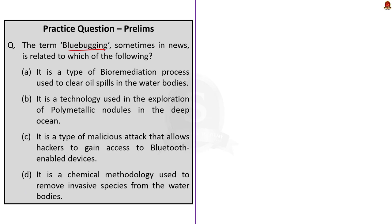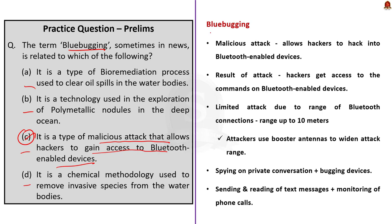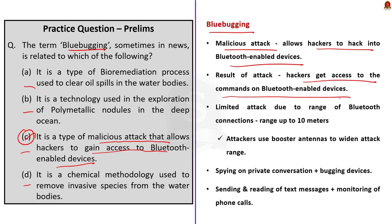The term 'bluebugging,' sometimes seen in news, is related to which of the following? The correct answer is option C. It is a type of malicious attack that allows hackers to gain access to Bluetooth-enabled devices. Bluebugging is a technique that allows hackers to hack into Bluetooth-enabled devices and get access to commands on those devices.